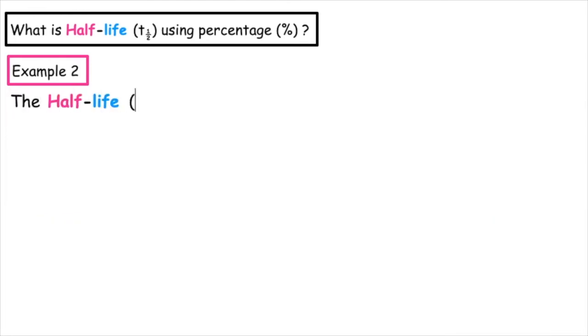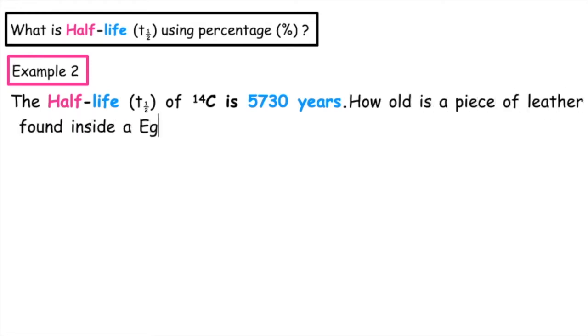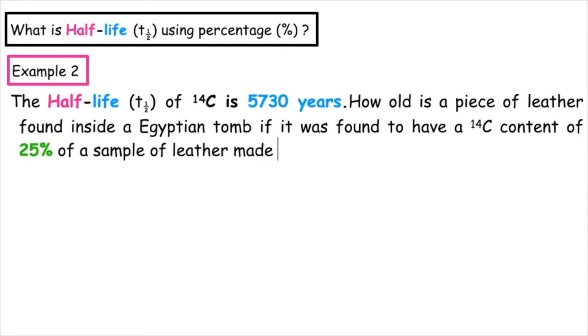Example two: the half-life of carbon-14 is 5,730 years. How old is a piece of leather found inside an Egyptian tomb if it was found to have carbon-14 content of 25% of a sample of leather made today? So we know that we're working in percentage.